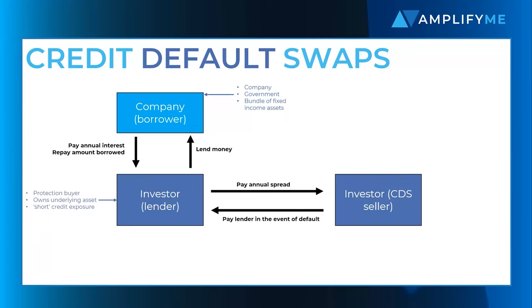These issuers are not directly involved in the CDS. The buyer of the CDS is called the protection buyer, and whilst they own the underlying debt, they are said to be short credit exposure. On the other hand, the seller of the CDS is called the protection seller, and although they do not own the underlying assets, they are said to be long credit exposure.